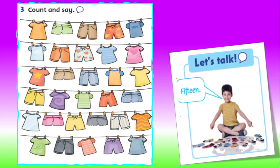Well done. So now everyone let's look at this picture. Can you tell me what are these? These are t-shirts and shorts. Can you count and say how many t-shirts and how many shorts? Let's count. 1, 2, 3, 4, 5, 6, 7, 8, 9, 10, 11, 12, 13, 14, 15. There are 15 t-shirts. Everyone say, there are 15 t-shirts.